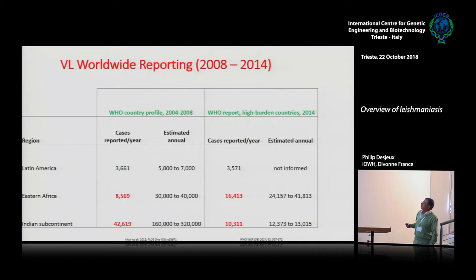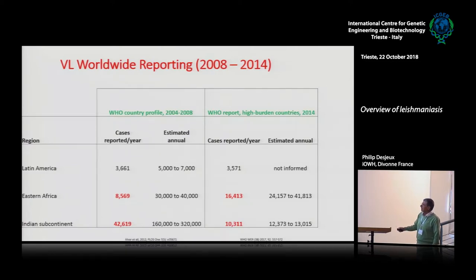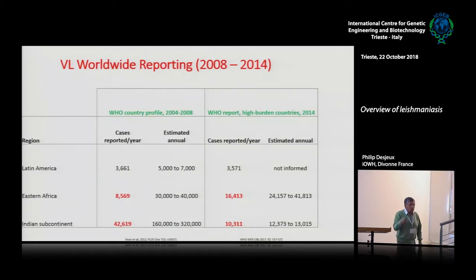Here we have more recent data showing the changes I just mentioned. Comparing 2004–2008 to 2014–2016, you see East Africa has doubled between 2004 and 2014, while the Indian subcontinent at the contrary went from 42,000 to 10,000 — even less now, around 7,600 to 8,000 cases.